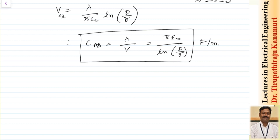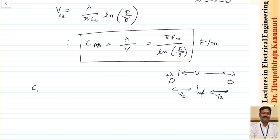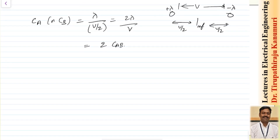The zero potential occurs somewhere in between the two conductors, so with respect to the reference point each conductor has a potential of V/2. Therefore the capacitance of each individual conductor — C_a or C_b — with respect to the reference point is lambda / (V/2) = 2 × C_ab. So C_a = C_b = 2π ε₀ / ln(d / r), in farads per meter.